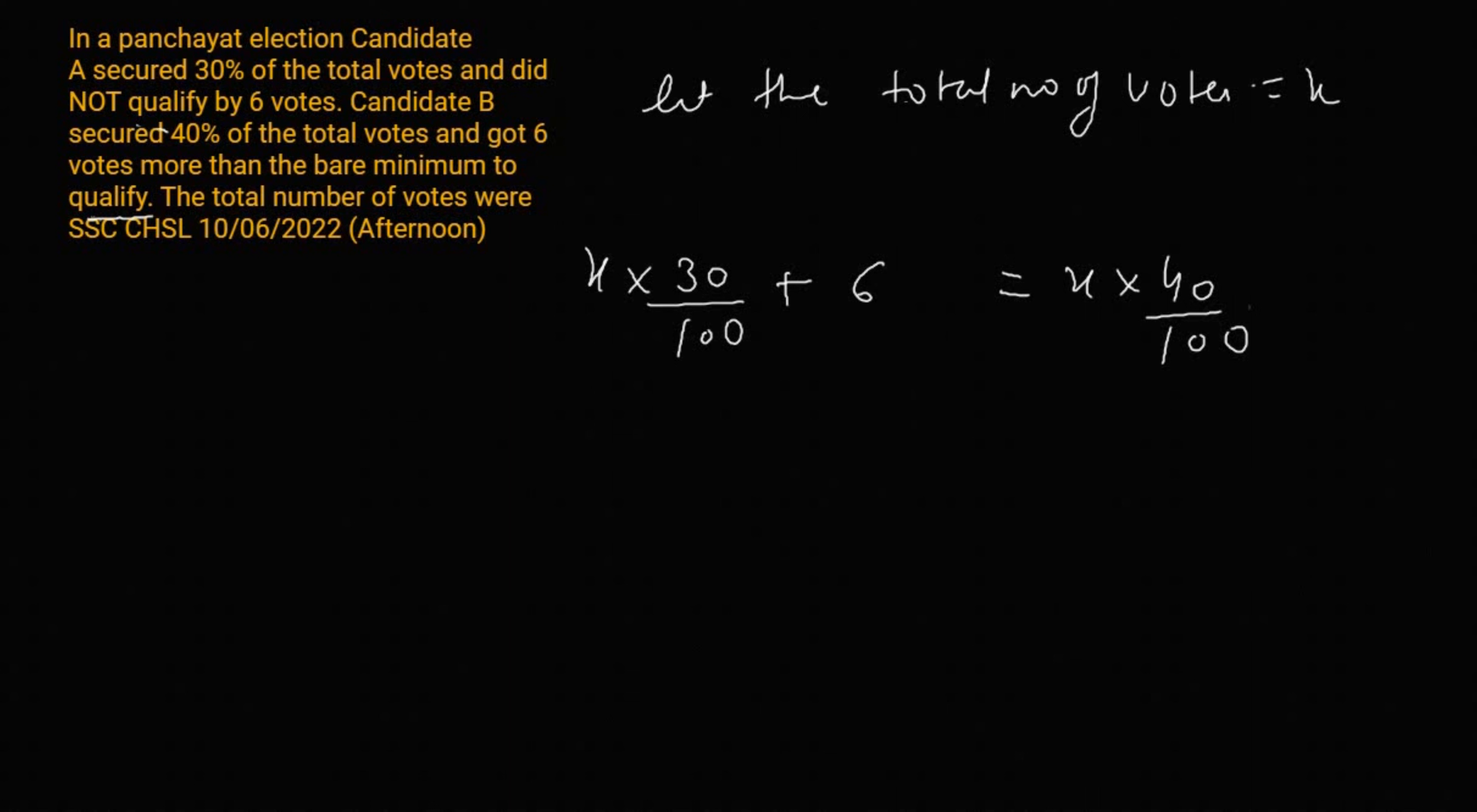For candidate B, setting up the equation: X times 30 over 100 plus 6 equals X times 40 over 100 minus 6. Simplifying both sides, we get 3X over 10 plus 6 equals 4X over 10 minus 6.